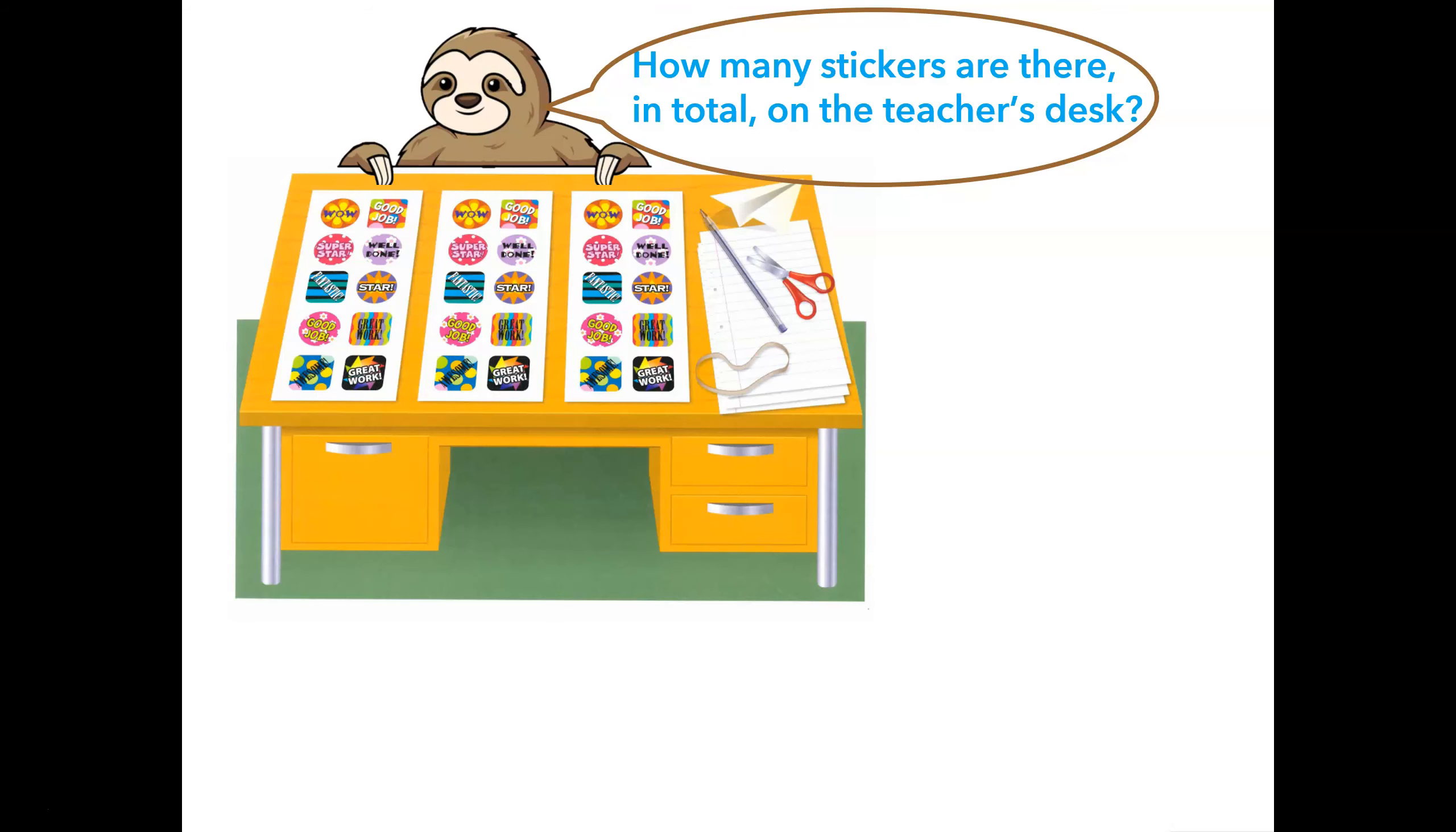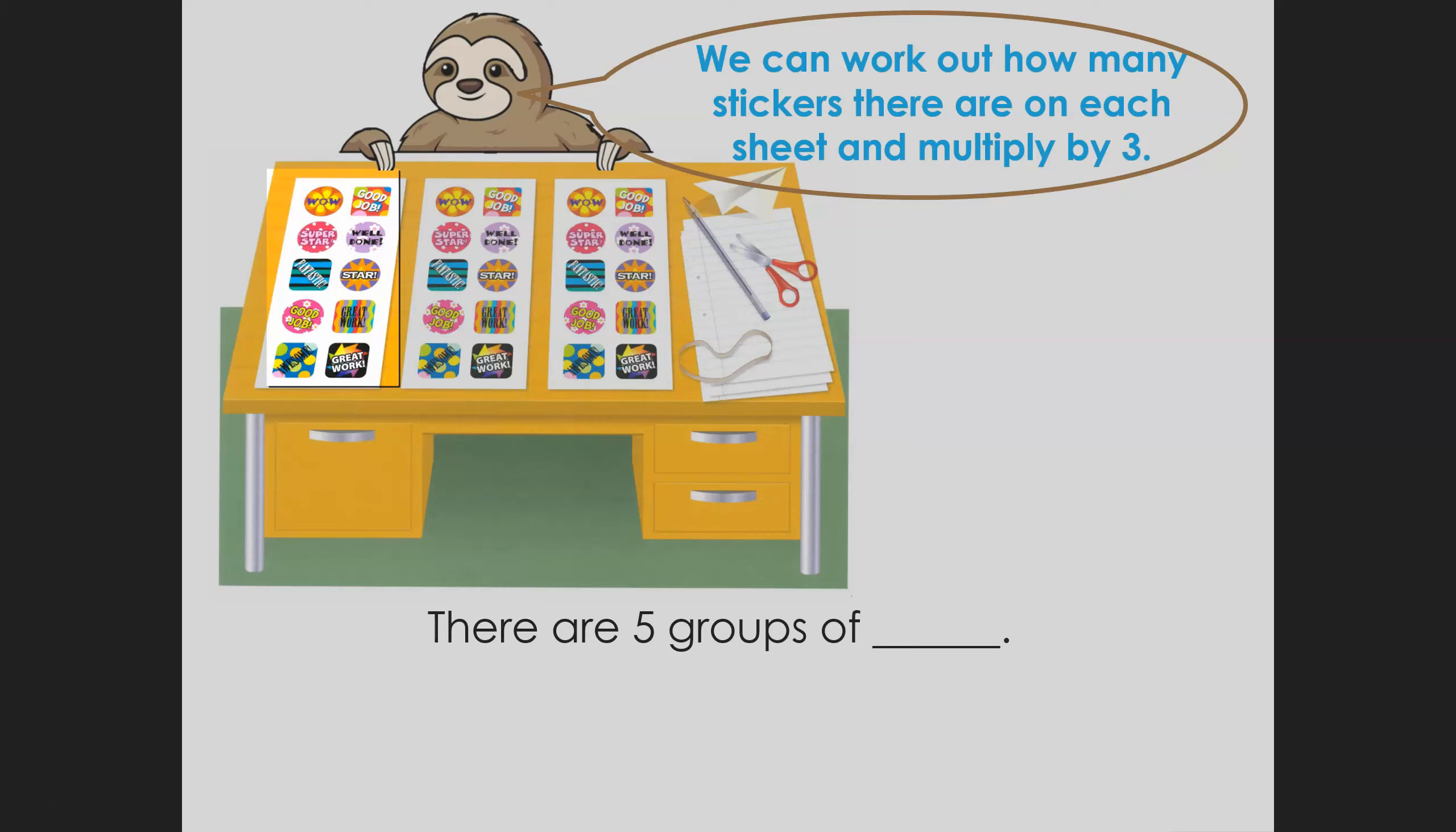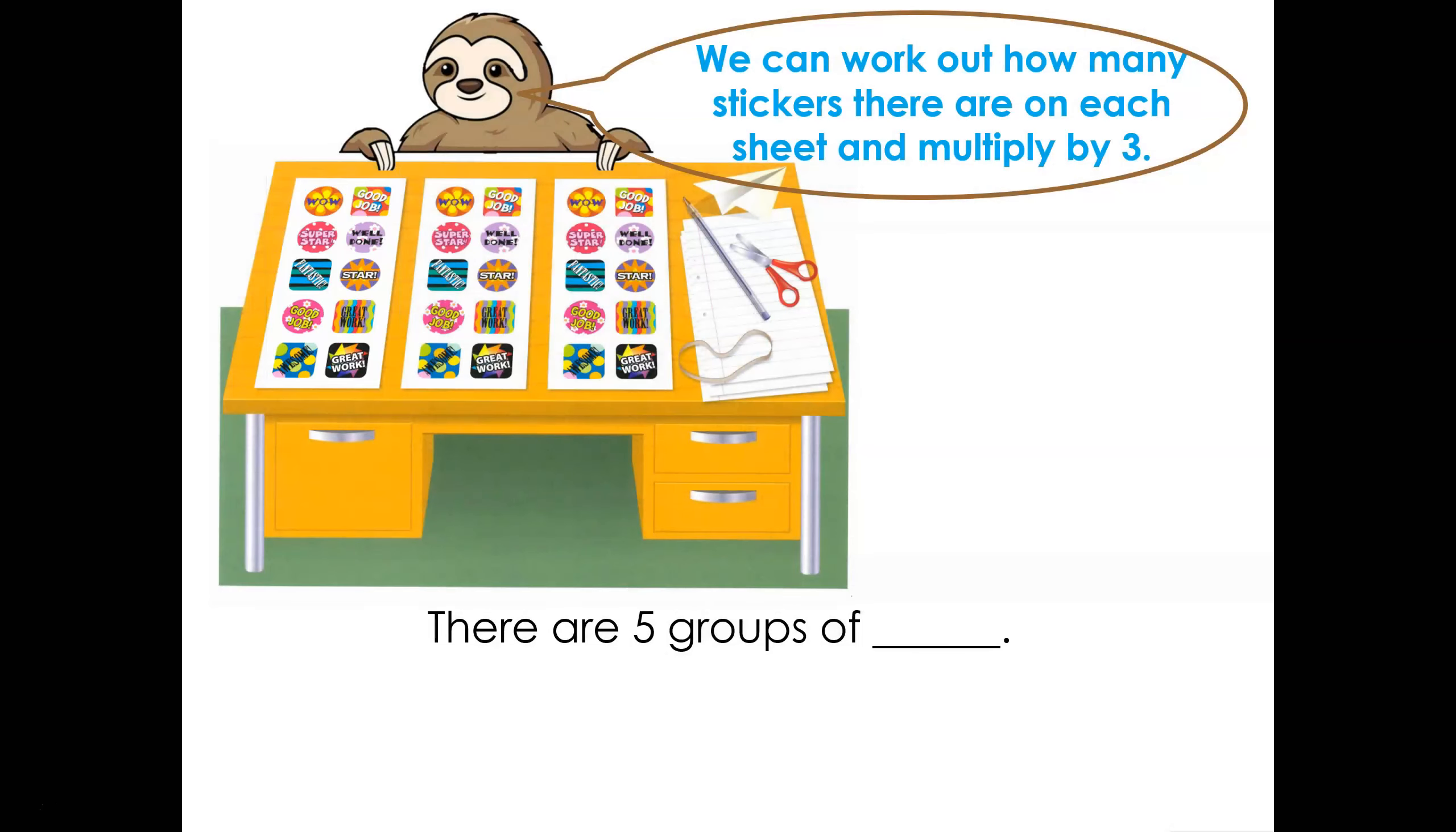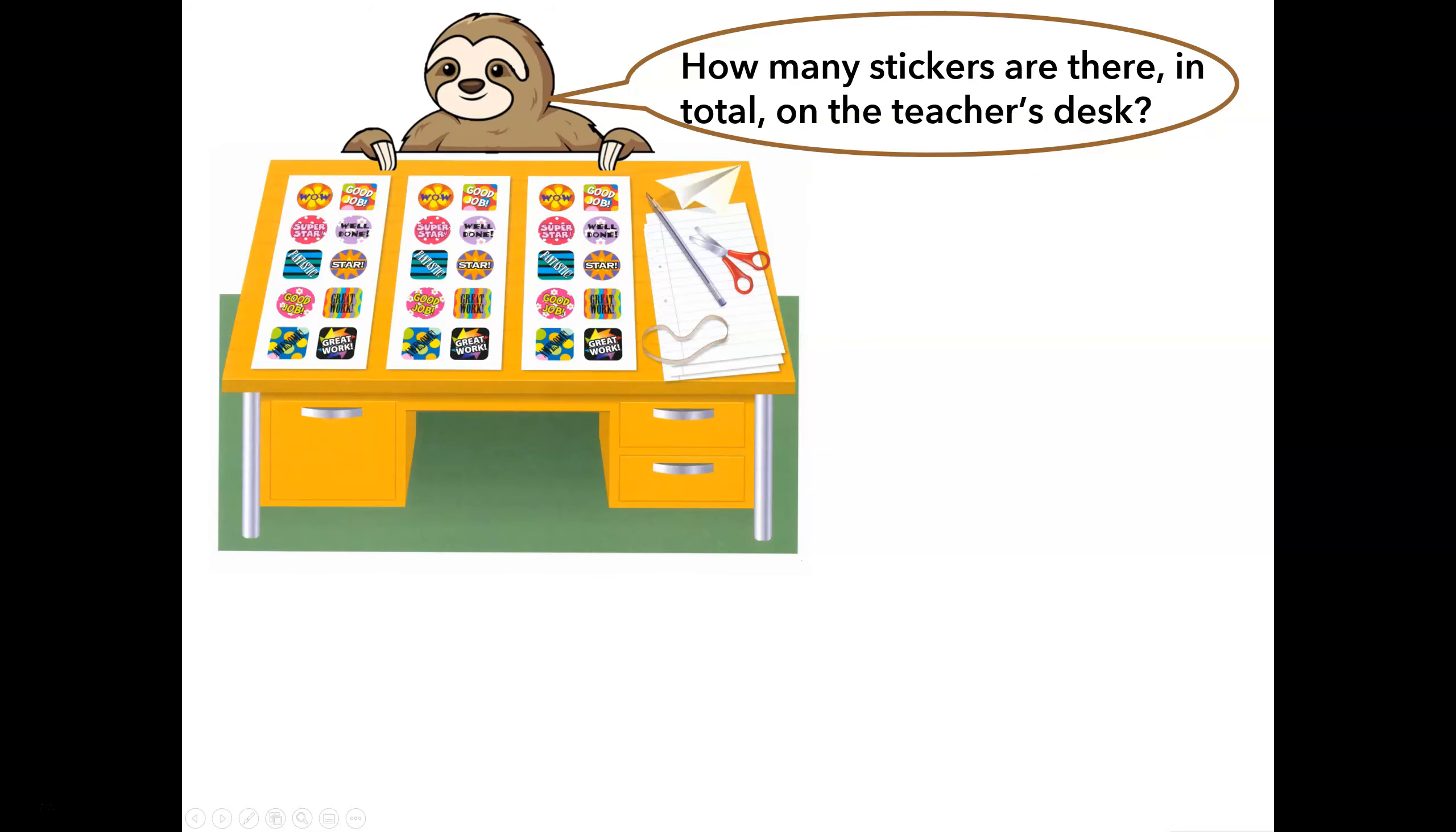Greg is back with a question. He wants to know how many stickers are there in total on the teacher's desk. We can see the stickers are set out in three arrays. We can calculate how many stickers there are in each array and then multiply by three. Good thinking. The first array has a column of five stickers multiplied by two, which is equal to ten stickers. There are ten stickers on one sheet. Now that we know how many stickers there are in one sheet, we can multiply that by three to find out the total number of stickers.